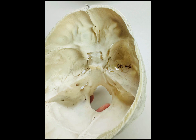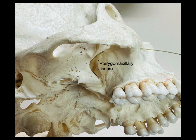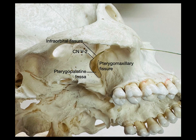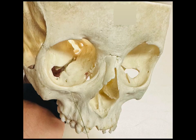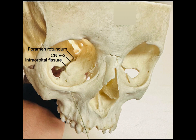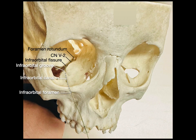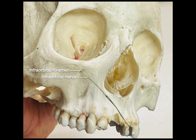Here we have a view showing a straw placed through the foramen rotundum representing V2. Following that straw laterally through the doorway of the pterygomaxillary fissure, V2 enters the pterygopalatine fossa and goes through the infraorbital fissure into the infraorbital groove. From the orbit view, V2 enters the pterygopalatine fossa via the foramen rotundum, traverses the infraorbital fissure, enters the infraorbital groove, and — with x-ray vision through the floor of the orbit — travels the infraorbital canal before exiting the infraorbital foramen as the infraorbital nerve, which provides general sensation to the lower eyelid, side of the nose, and upper lip.